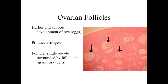We're going to focus primarily on the ovarian follicles. This is going to be the structure involved with producing the ova — the egg that's going to be released by the ovary and hopefully fertilized during reproduction. It's also involved with hormone secretion, specifically the production of estrogen.